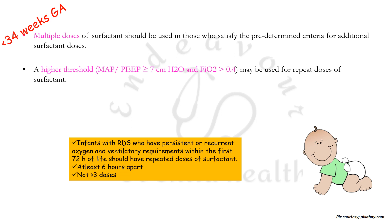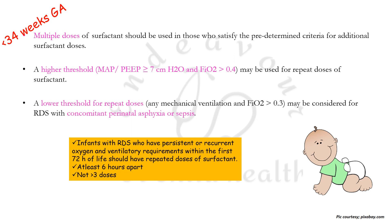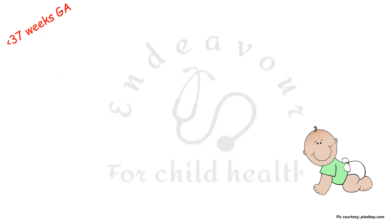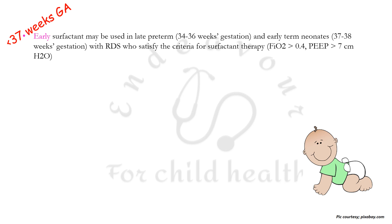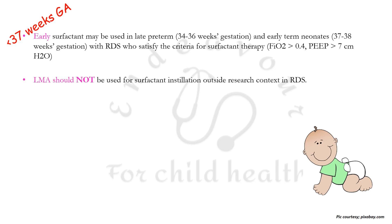A higher threshold — MAP or PEEP ≥7 cm H₂O and FiO₂ >0.4 — may be used when considering a repeat dose of surfactant, compared with PEEP ≥6 and FiO₂ ≥0.3 for the first dose. A lower threshold for repeat doses can be used in patients with concomitant perinatal asphyxia or sepsis along with RDS. For infants less than 37 weeks gestational age, early surfactant may be used in those satisfying the criteria — FiO₂ >0.4 and PEEP >7 cm H₂O. Laryngeal mask airway should not be used for surfactant instillation.